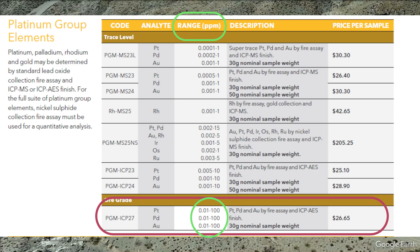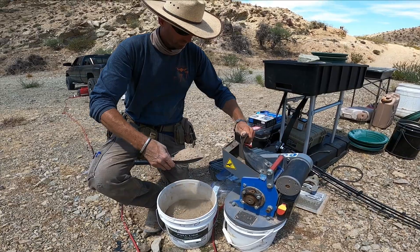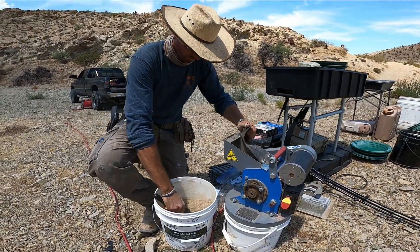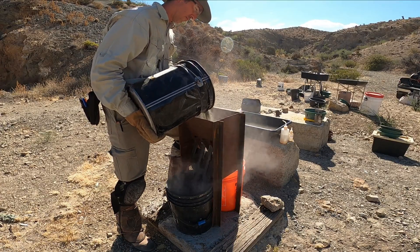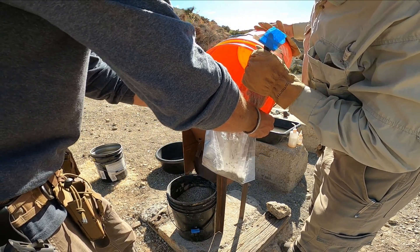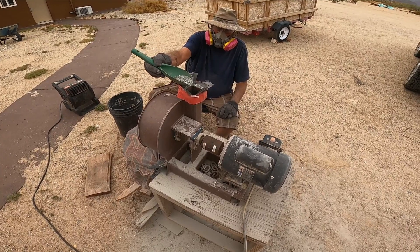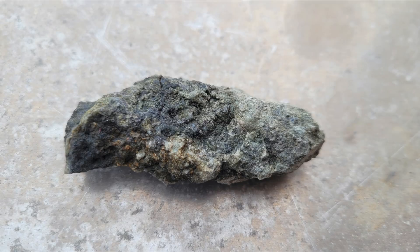ICP-AES is inductively coupled plasma atomic emission spectroscopy — a spectral method used to determine the elemental composition of samples and quantify elemental concentration. I'm walking you through this because you may have questions while sampling in the field, from how large a sample to submit to the lab, to how to prepare the sample and the submittal form. Feel free to call the lab, talk to their lab manager or one of the chemists, and they can give recommendations on what test methods to choose for your type of ore.